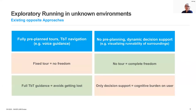When studying prior art and existing systems that support running in unknown environments, we identified two opposite types of approaches. The first proposes fully pre-planned tours with turn-by-turn navigation support to follow them. The second does not pre-plan any tour but provides the user with dynamic decision support to choose the path during the run.